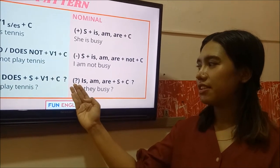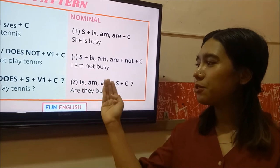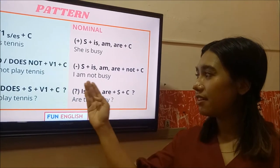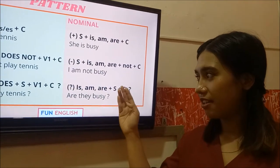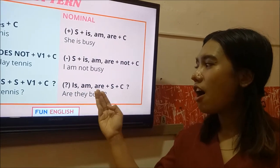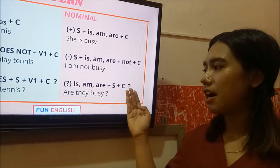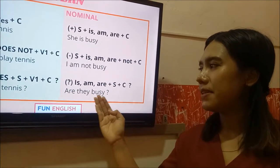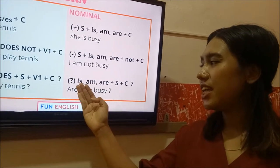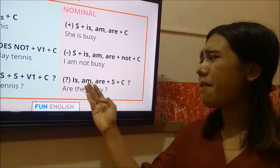And the interrogative. You have to put the to be before the subject, is, am, are, plus subject, plus object, and adjective as complement. Are they busy? Is she busy? Am I busy?